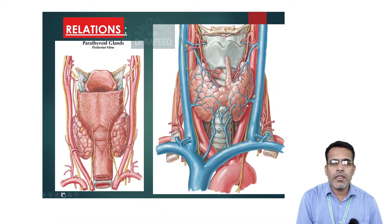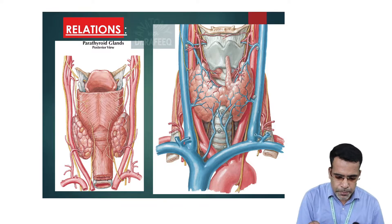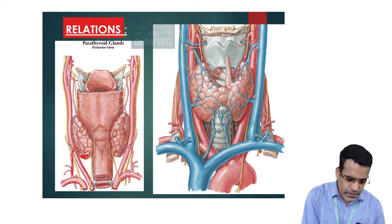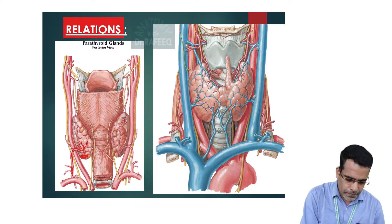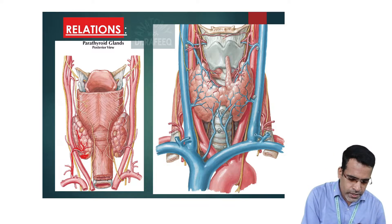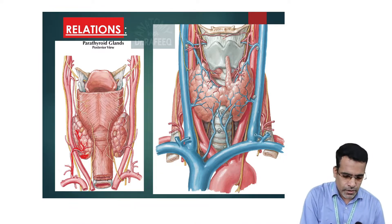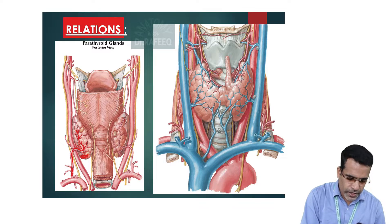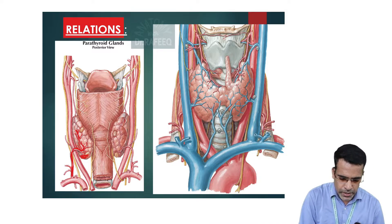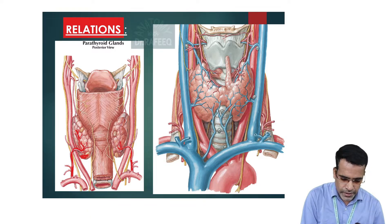The base portion of the thyroid gland receives the inferior thyroid artery, which supplies multiple branches to the thyroid gland. One important branch is the ascending branch of the inferior thyroid artery, which runs upward. The inferior thyroid artery is a branch of the thyrocervical trunk, which also provides other branches and supplies the base of both the right and left lobes.